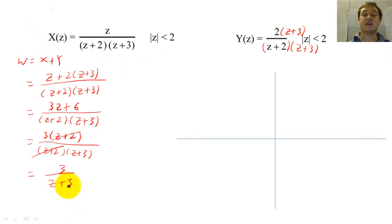Both X and Y have ROCs of absolute value of Z less than 2. However, because the addition created pole-zero cancellations for the pole at negative 2, W of Z will have one pole at negative 3 and the ROC of W will be the absolute value of Z less than 3.